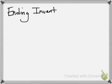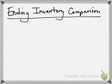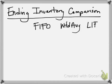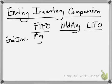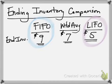If we look at the balance sheet and compare the ending inventory values under FIFO, weighted average, and LIFO, the ending inventory was $9, $7, and $5 respectively, and we end up with some very distinct differences.